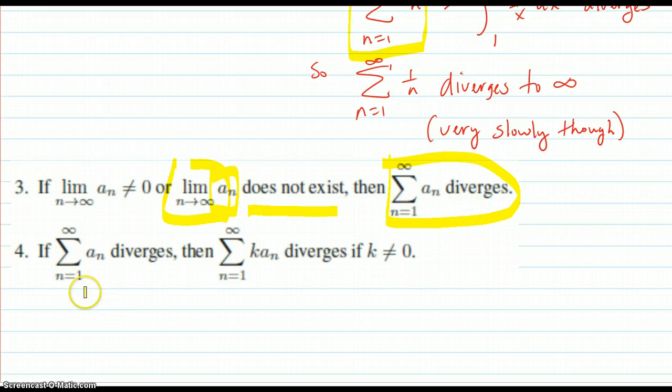Also, if you have a series that diverges and you multiply each term by k, that certainly will diverge also. Because you can just factor out the k. And k times diverges equals divergent.